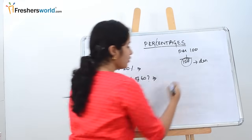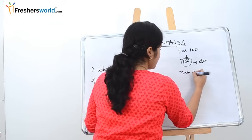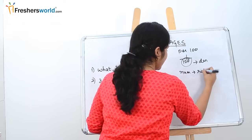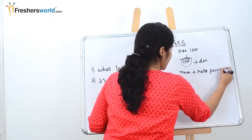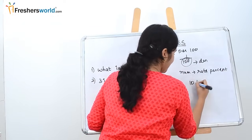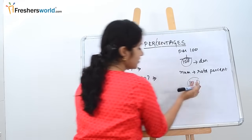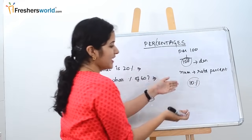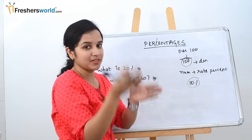What do we call the numerator here? The numerator is called the rate percent. So if you get something like 10% or 20%, that number — 10 or 20 — is the numerator and we call it the rate percent.